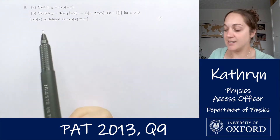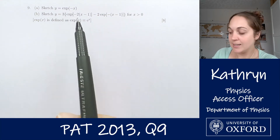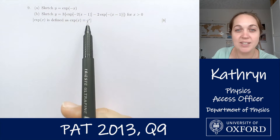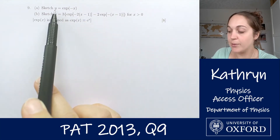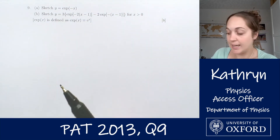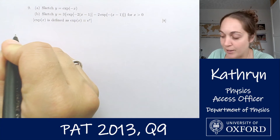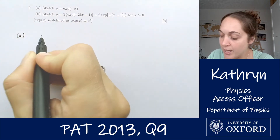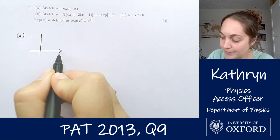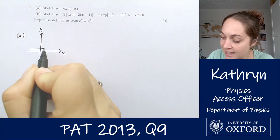So question 9 says sketch y equals exp of minus x, and it tells us that exp of x is just a different way of writing e to the x. So that's what we're looking at — y equals e to the minus x. You might already know what that looks like. I'm going to have a little bit of a think about it. So I know that e to the x, if that's our x-axis and that's our y-axis, e to the x looks like that.